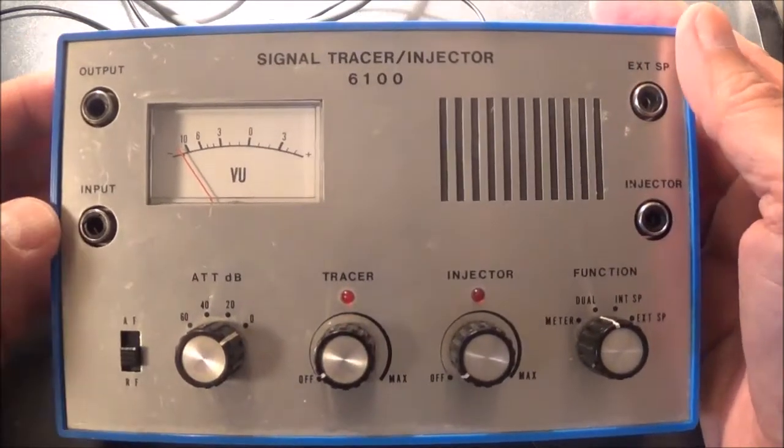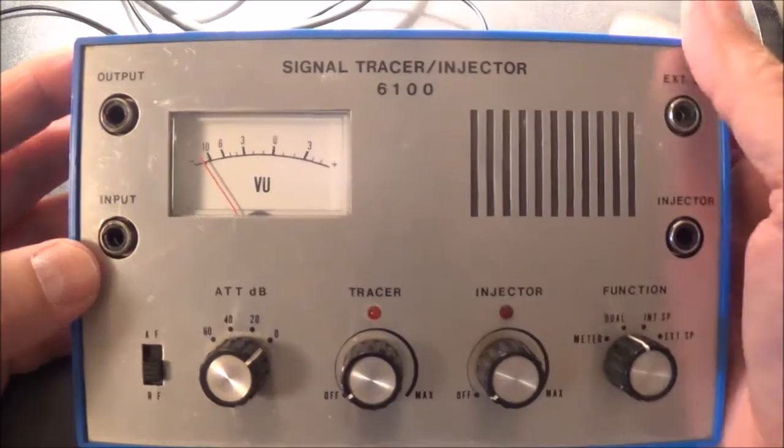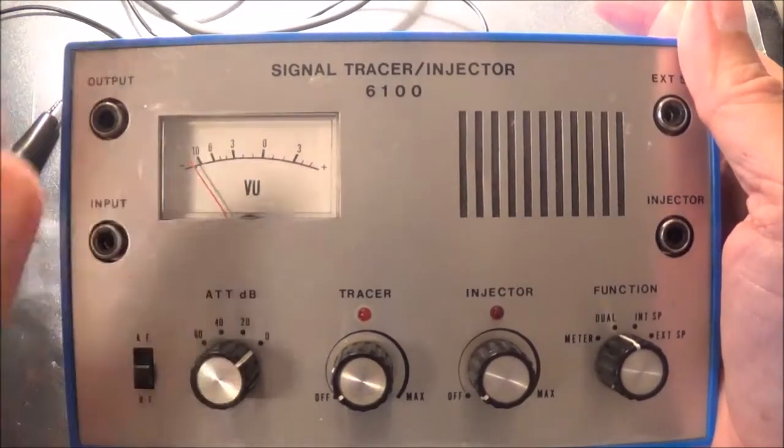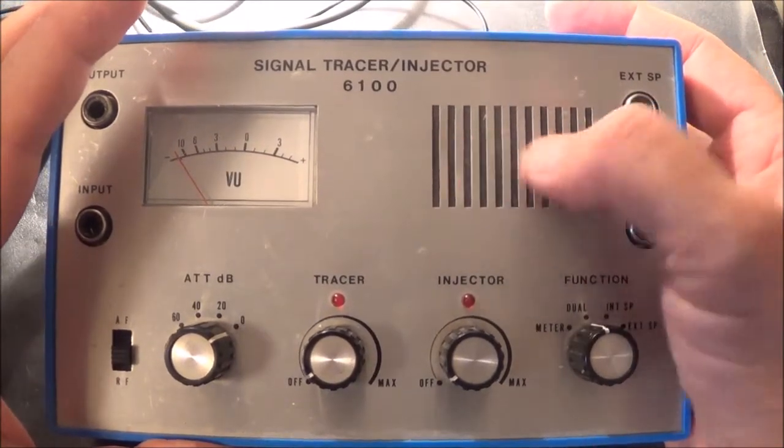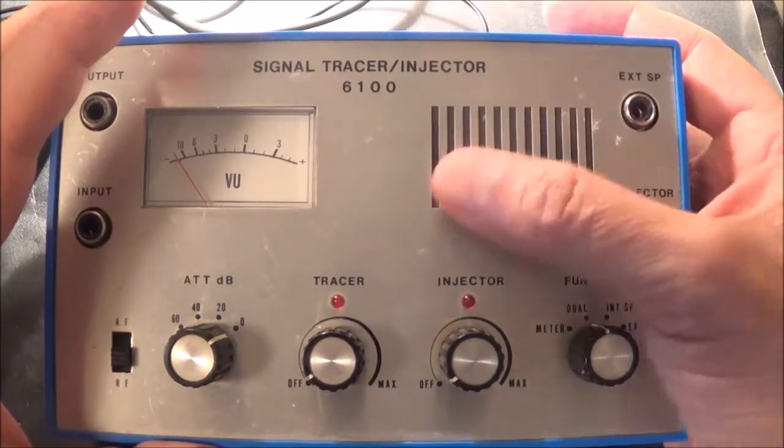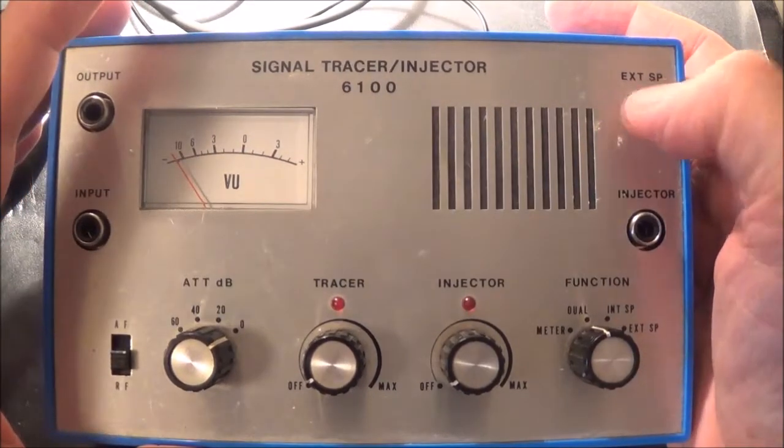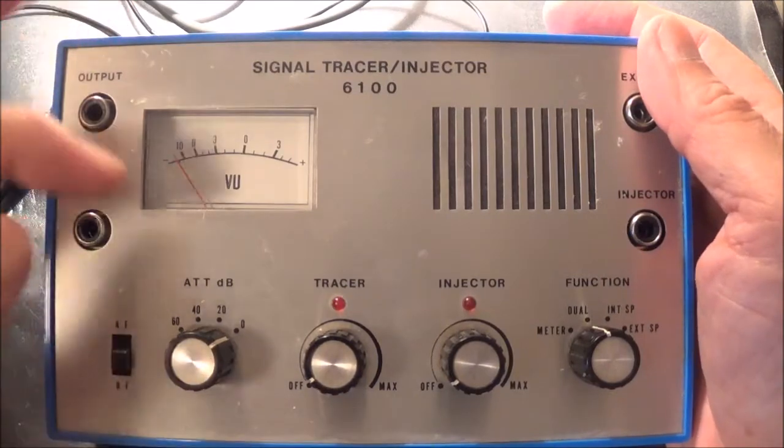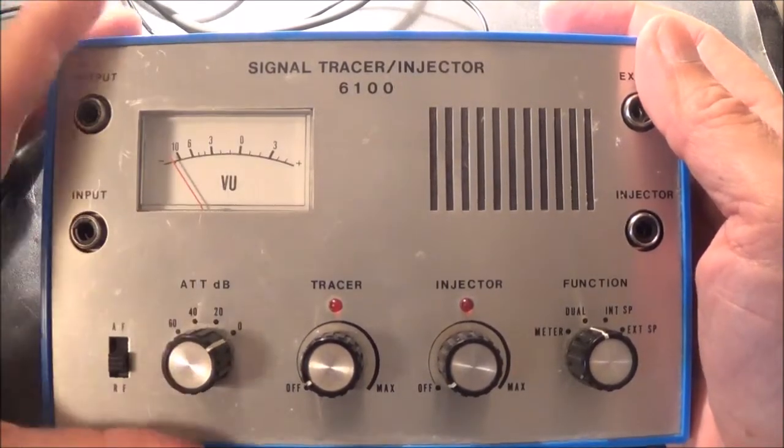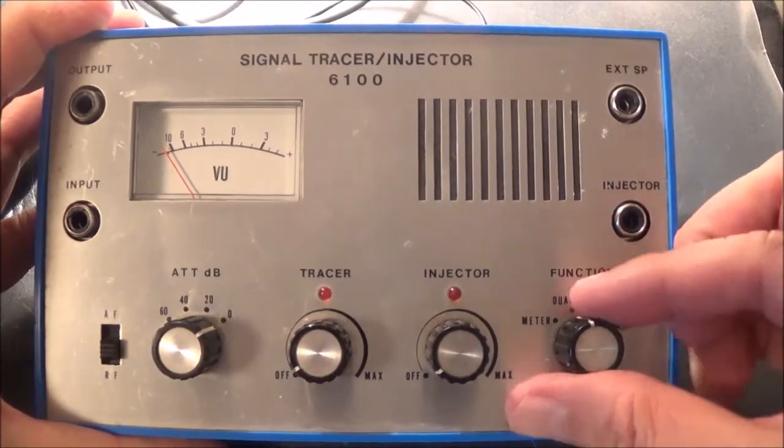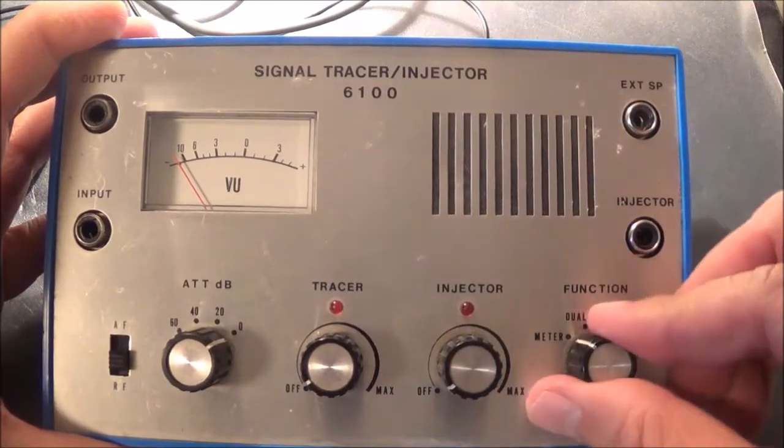I would definitely recommend getting something like this. Let me go over the controls. It's got a VU meter. A lot of times these units don't have VU meters. Then you just have to rely on your ear if you want to know the amplitude difference between two signals. With this, you can see exactly the strength of the signal. You can have it on VU meter only, on dual, which means sound and meter, or just the internal speaker.